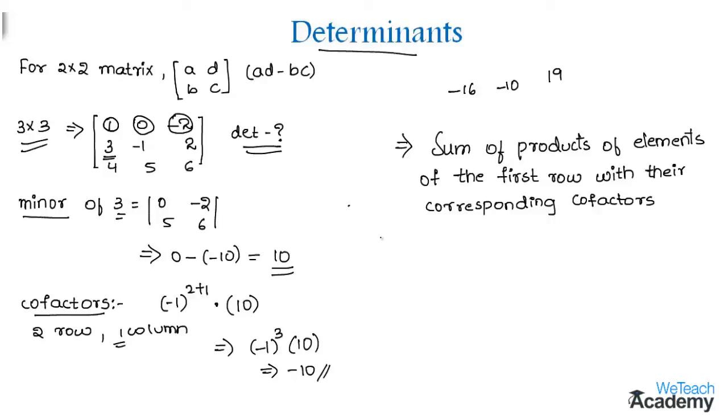And now let us find the determinant value for this matrix. So determinant would be equal to the element which is 1 into its cofactor which is minus 16 plus of 0 into its cofactor which is minus 10 plus of the next element which is minus 2 into its cofactor 19. So that implies here we get minus 16 plus 0 plus minus 2 into 19 which is minus 38. So that implies we get here minus 54 as the determinant value for this matrix.